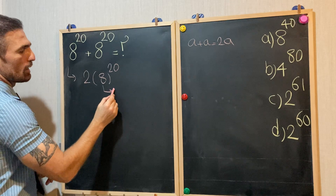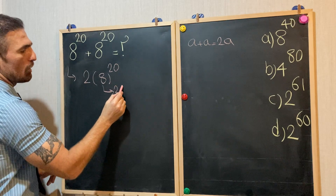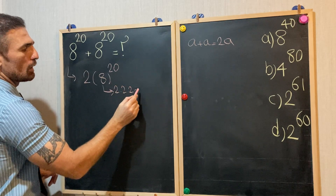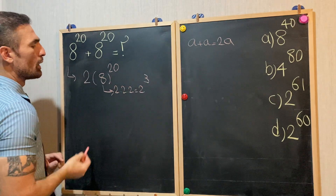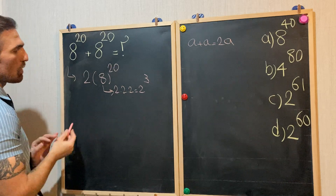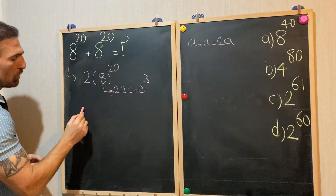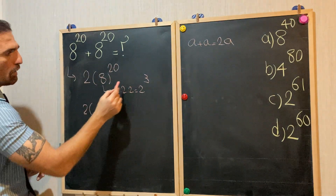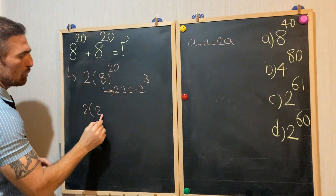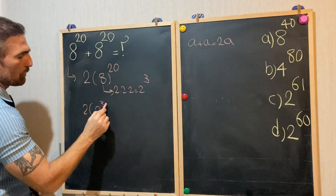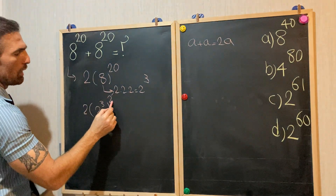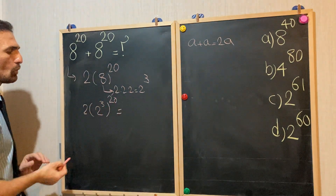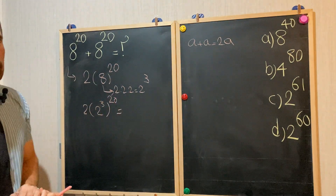As you know, 8 equals 2 times 2 times 2, which equals 2 to the power of 3. Let's rewrite it as 2 times 2 to the power of 3, raised to the power of 20.